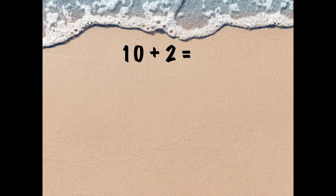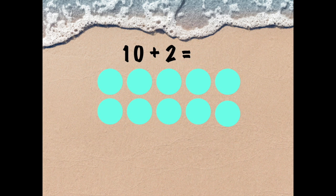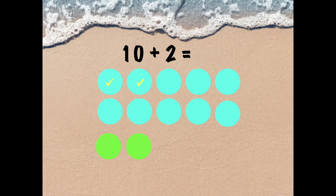I can draw my picture with counters: 10 and 2. Let's count them together: 1, 2, 3, 4, 5, 6, 7, 8, 9, 10, 11, 12. Ten plus 2 equals 12.